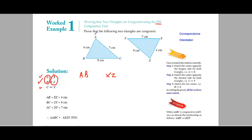You can see that AB is 4 cm and XZ is also 4 cm. So AB is equal to XZ and both are equal to 4 cm. We have compared one side of both the triangles and they are equal.